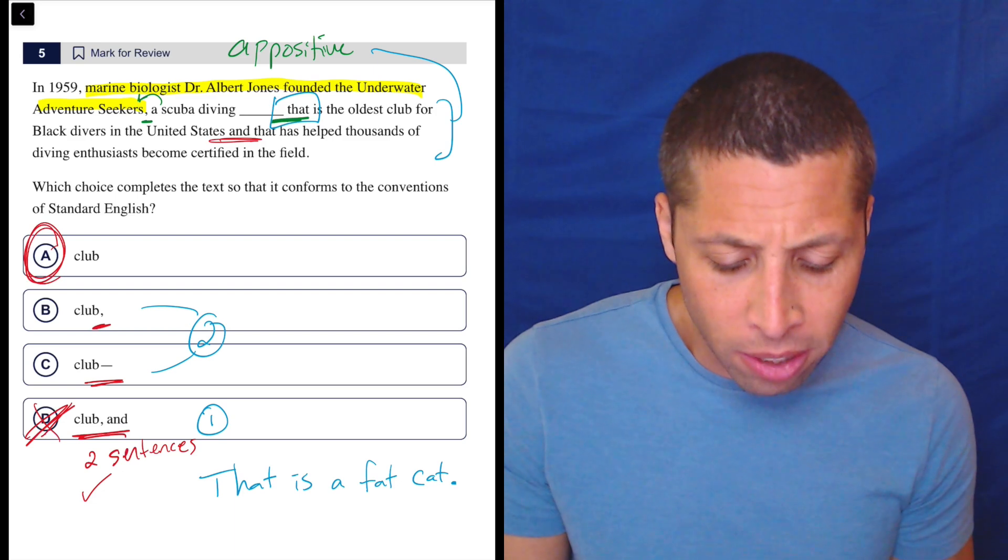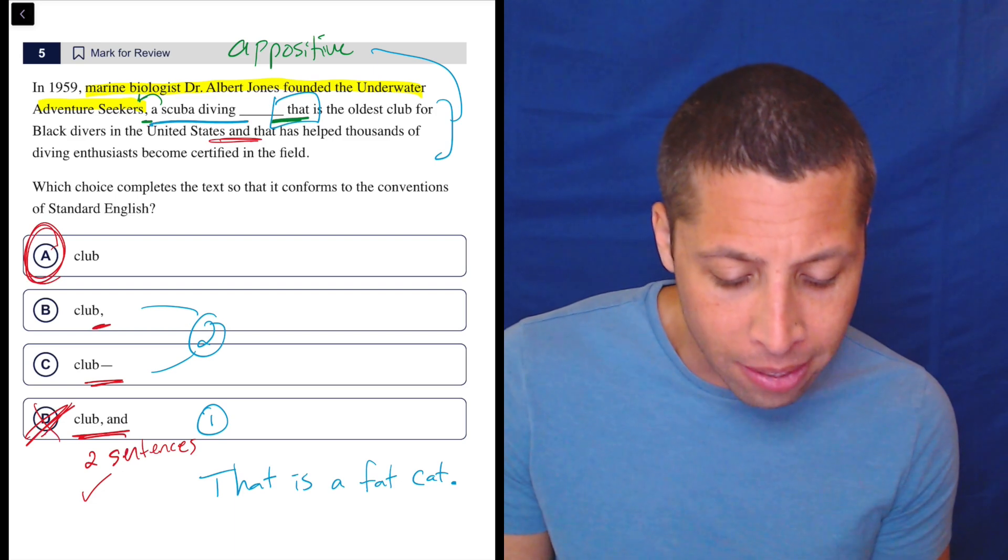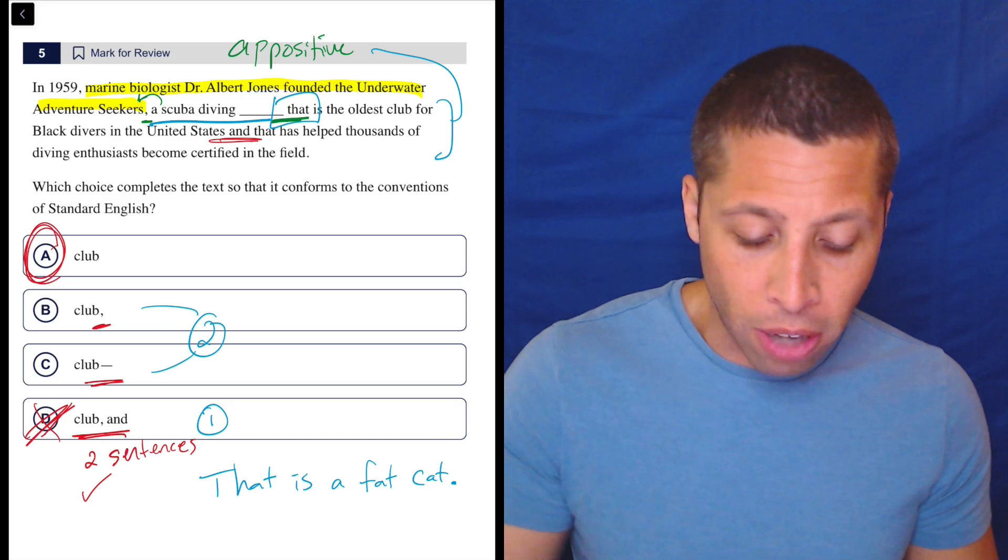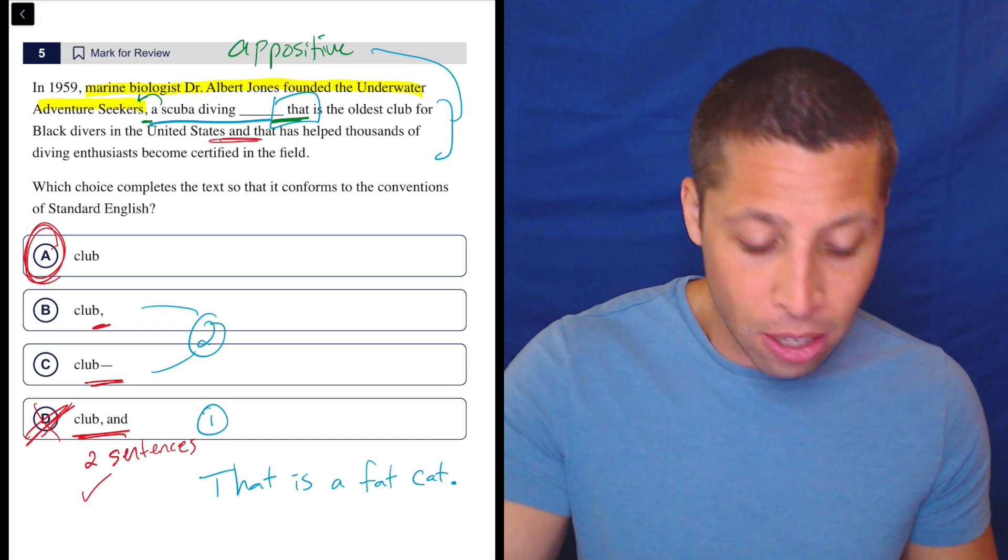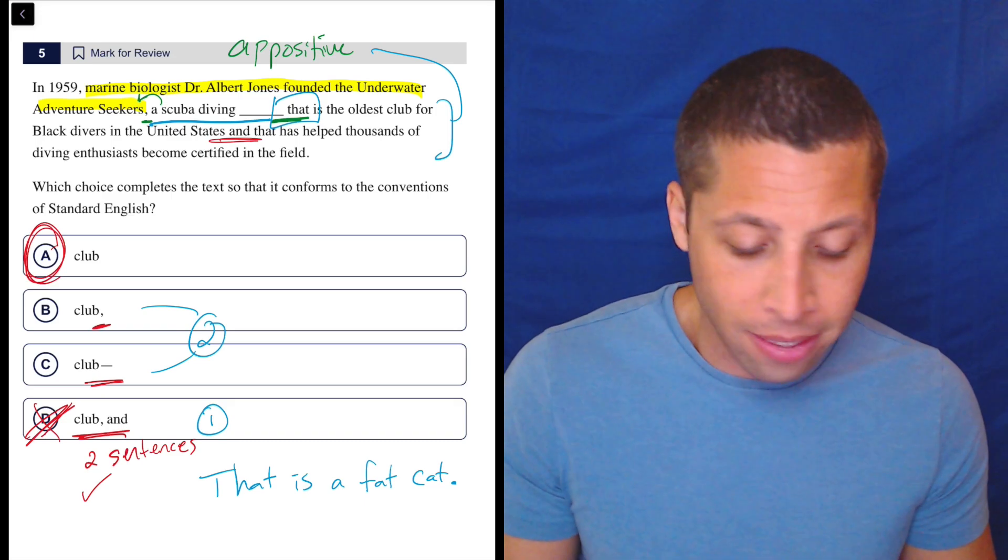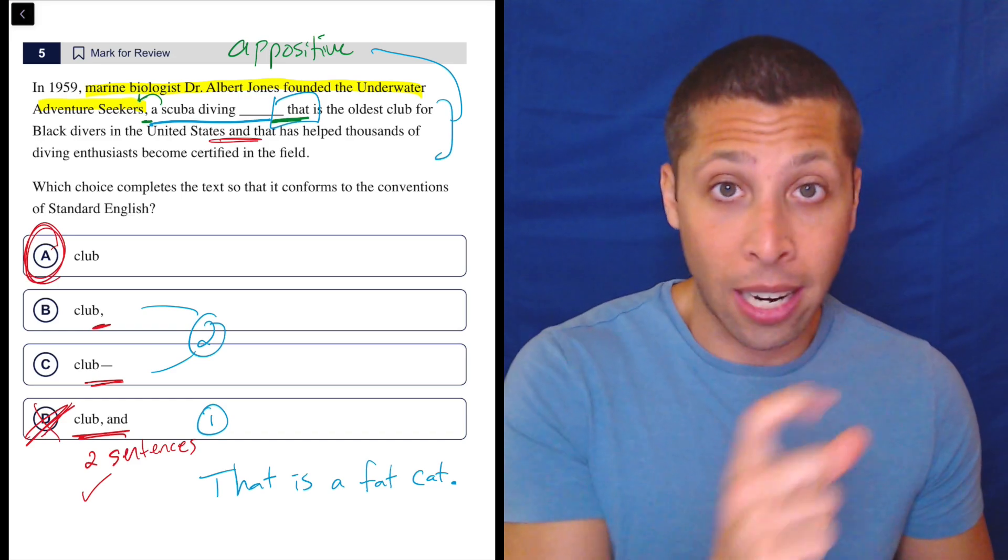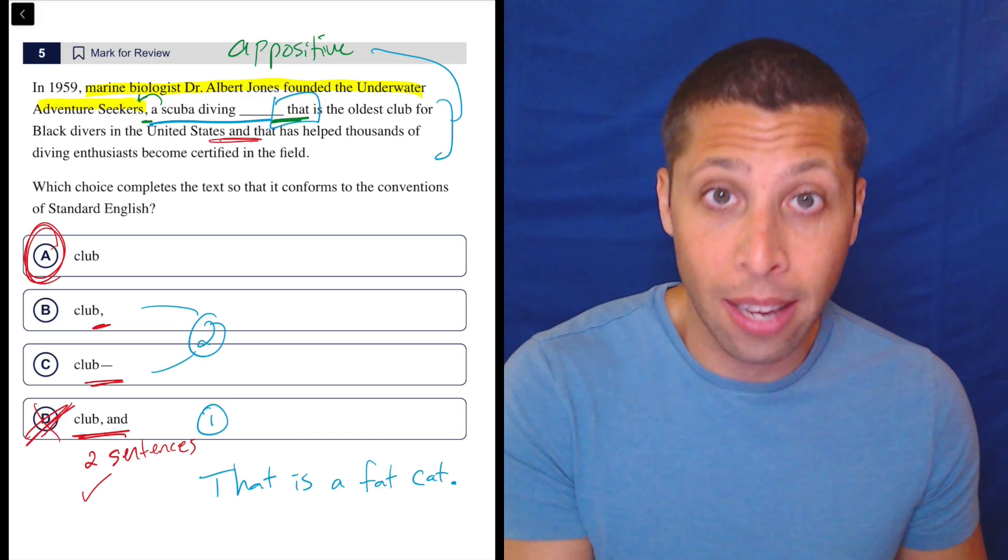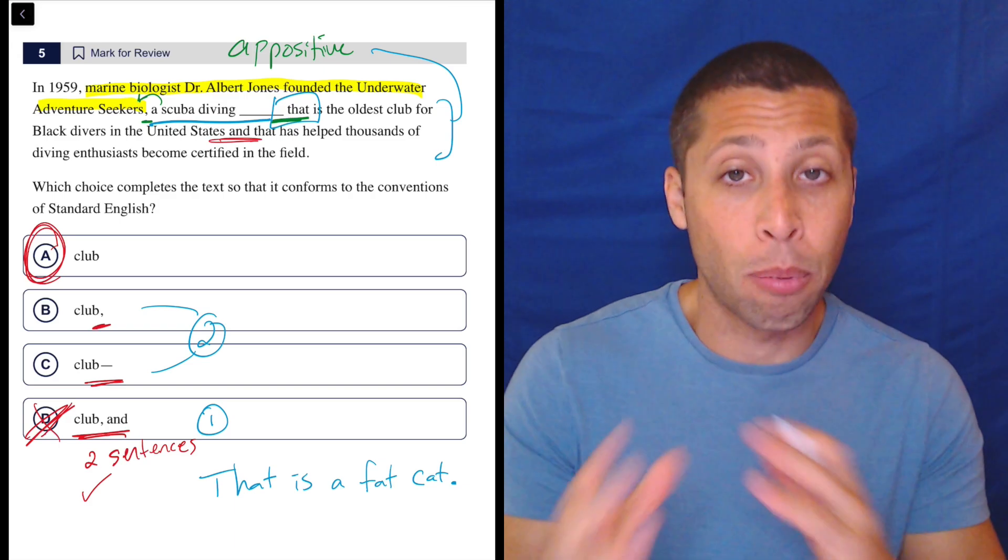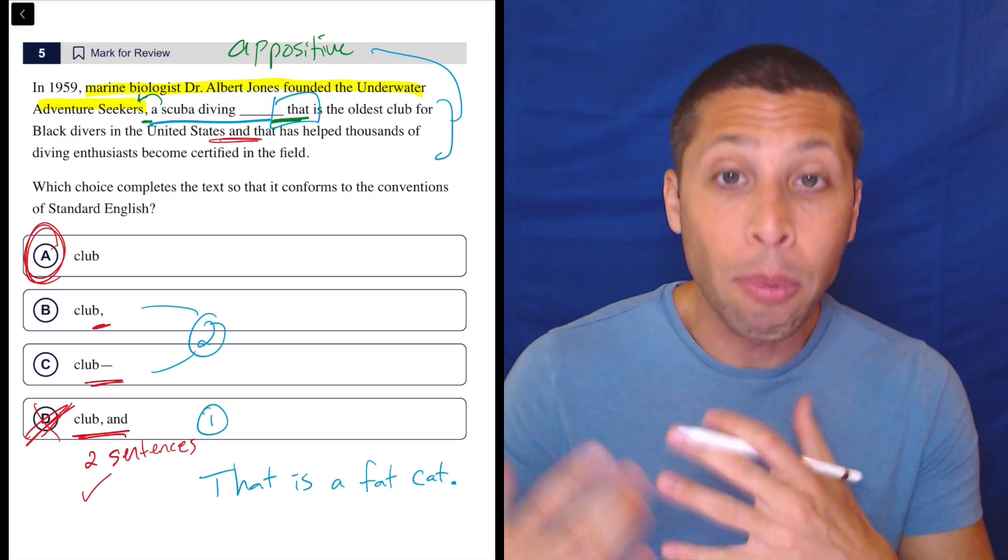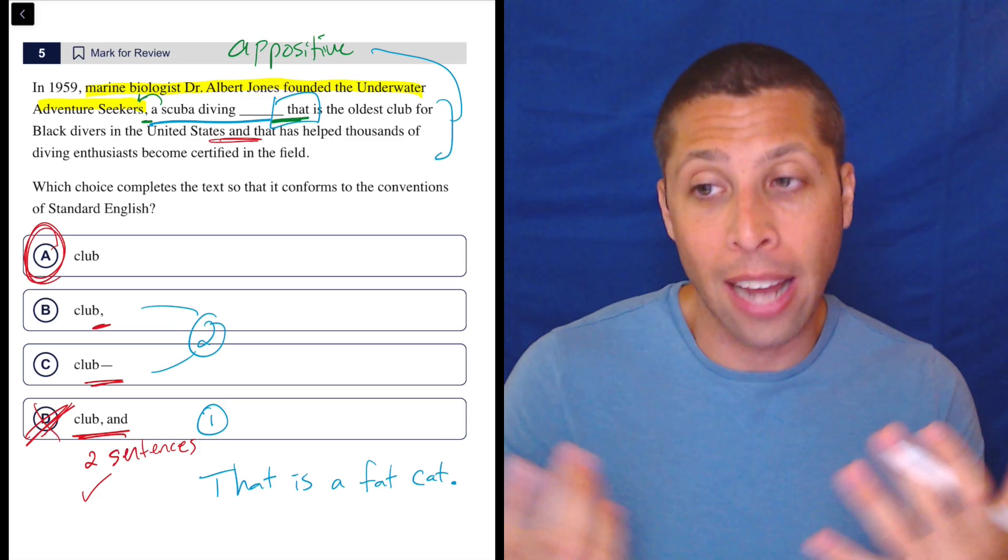Another problem might be that if we put a comma, we would be suggesting that this scuba diving thing is kind of extra. So we might try to read the sentence as 'marine biologist Dr. Albert Jones founded the Underwater Adventure Seekers. That is the oldest club for black divers in the United States.' And if I do that, it immediately sounds like that second part starting with 'that' is its own sentence. And that's no good. Again, I have that same problem of the punctuation isn't right to make that its own sentence. I would need an 'and.' I would need something else. And it's just not there.